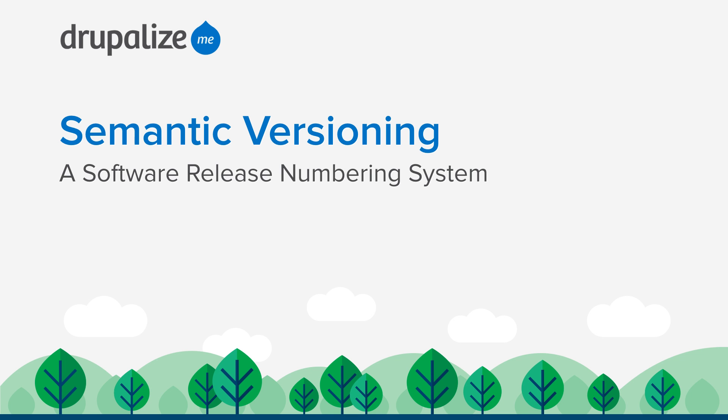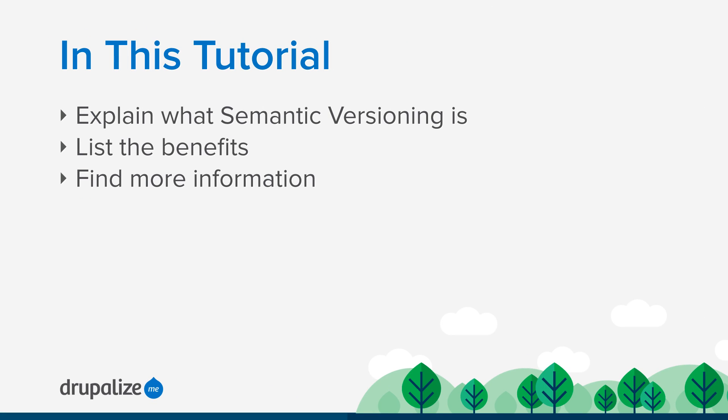The term semantic versioning, or semver, is a way of numbering a software release. It's something that's being adopted more and more widely by different software projects. In this tutorial, we're going to walk through a few basic steps to explain exactly what semantic versioning is and how it works. We'll talk about some of the benefits and why people are switching over to semantic versioning, and we'll wrap up by showing you how you can get more information and the actual specifications for it.